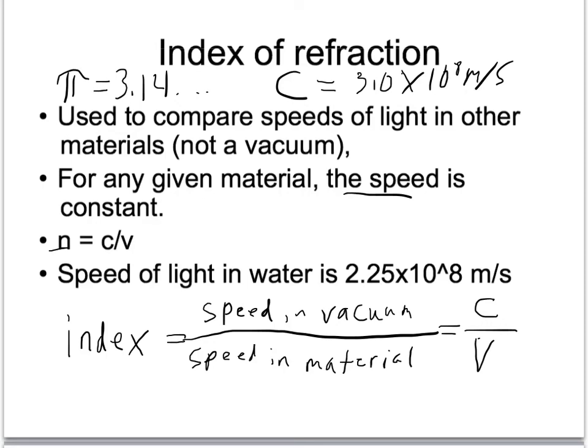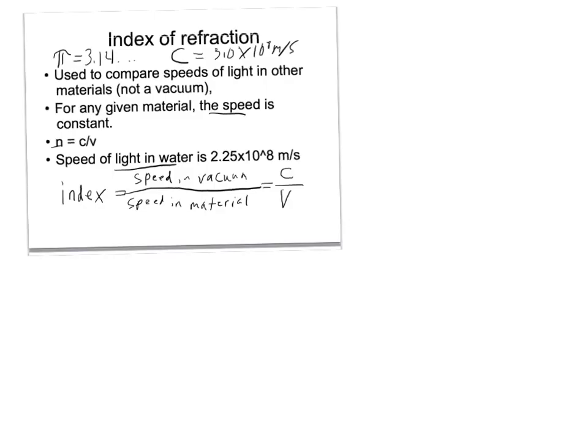A pretty typical one that comes up is speed of light in water. A lot of experiments are done shining light through water. Let's do that calculation real fast. Find the index of refraction of water. If I want the index of refraction of water, remember that n, the index of refraction, equals c over v.